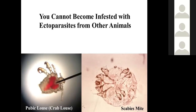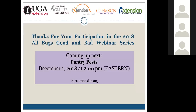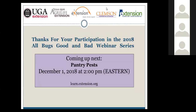That pretty well concludes today's presentation. Are there any questions? There is an extension office in every state. The next webinar is on pantry pests — that will be December 7th, not December 1st as shown on the slide.